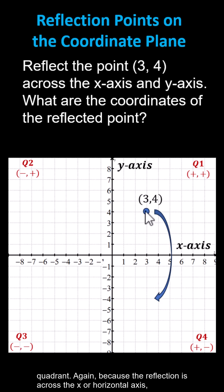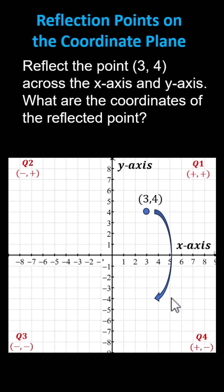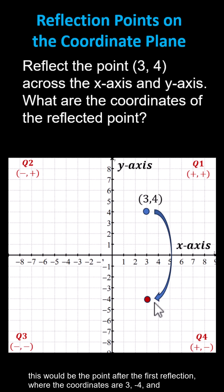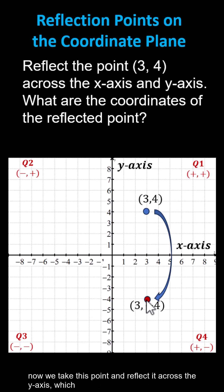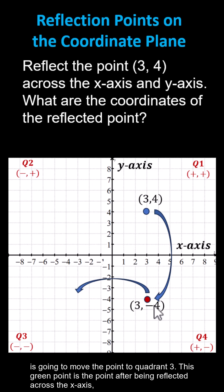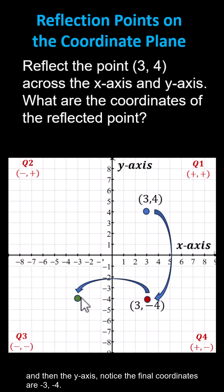Again, because the reflection is across the x or horizontal axis, this would be the point after the first reflection, where the coordinates are 3 comma negative 4. And now we take this point and reflect it across the y-axis, which is going to move the point to quadrant 3. This green point is the point after being reflected across the x-axis and then the y-axis. Notice the final coordinates are negative 3 comma negative 4.